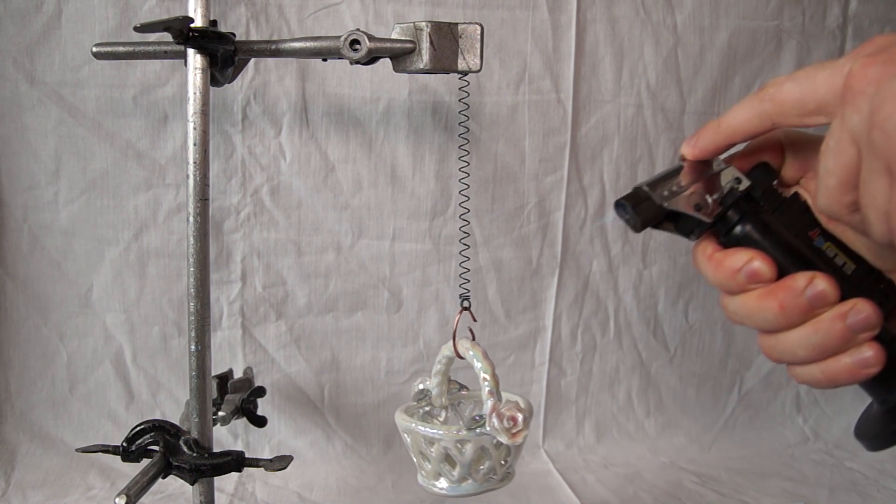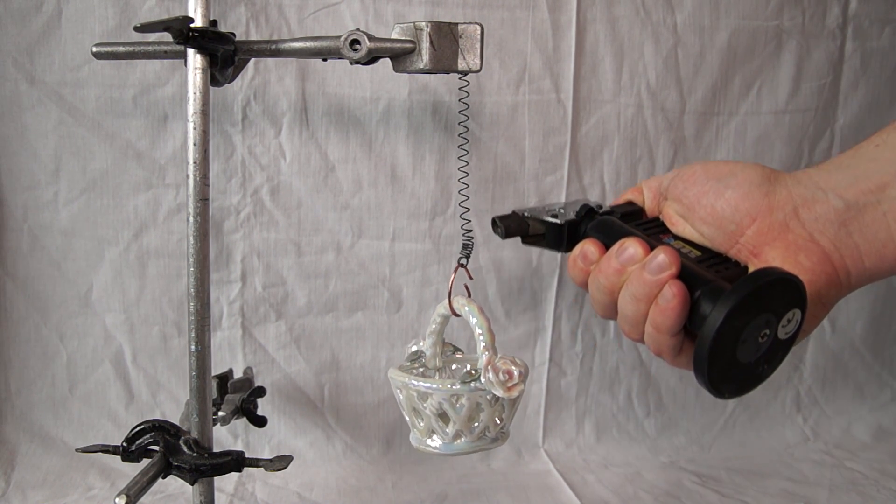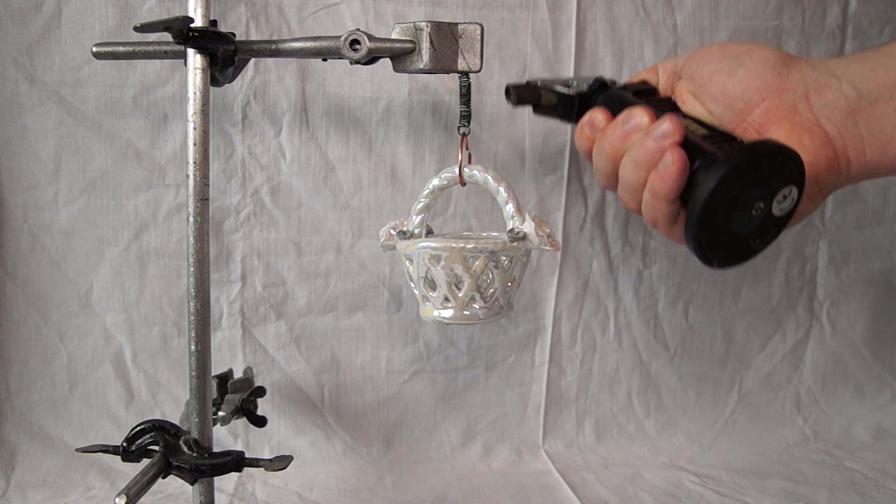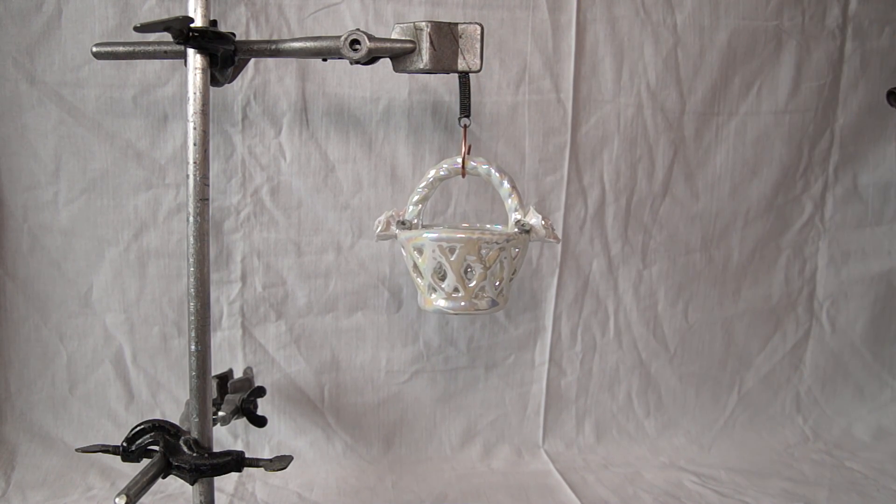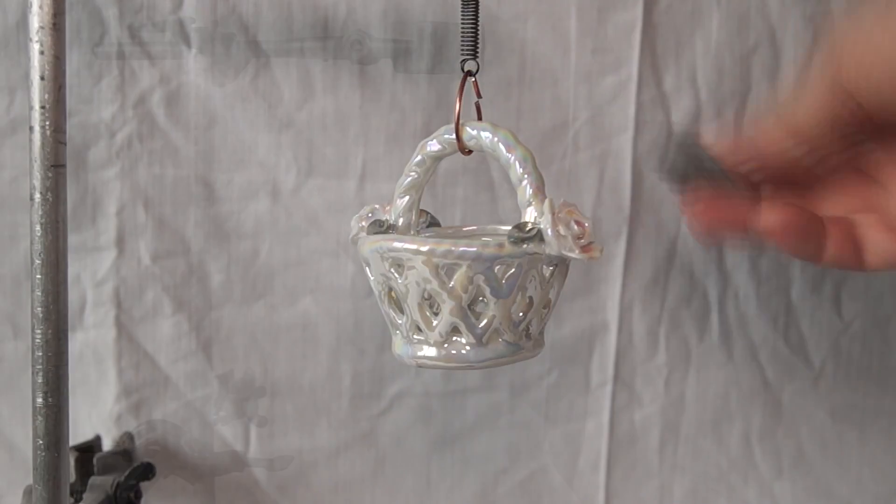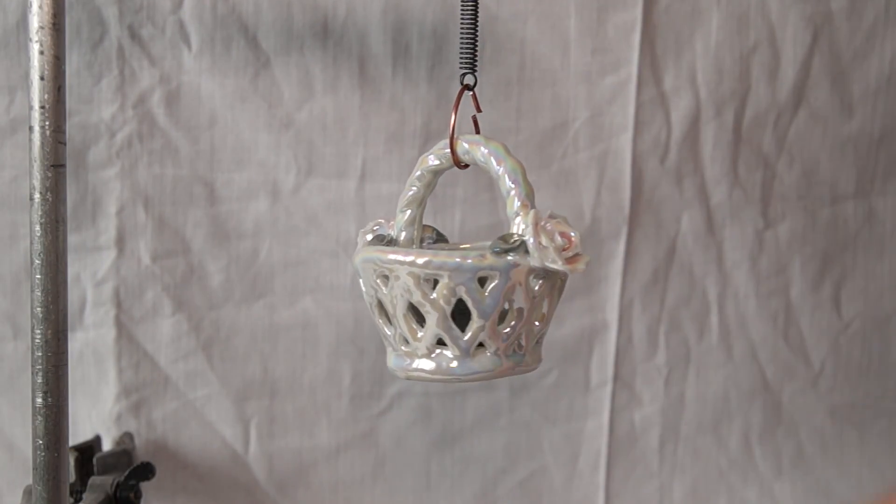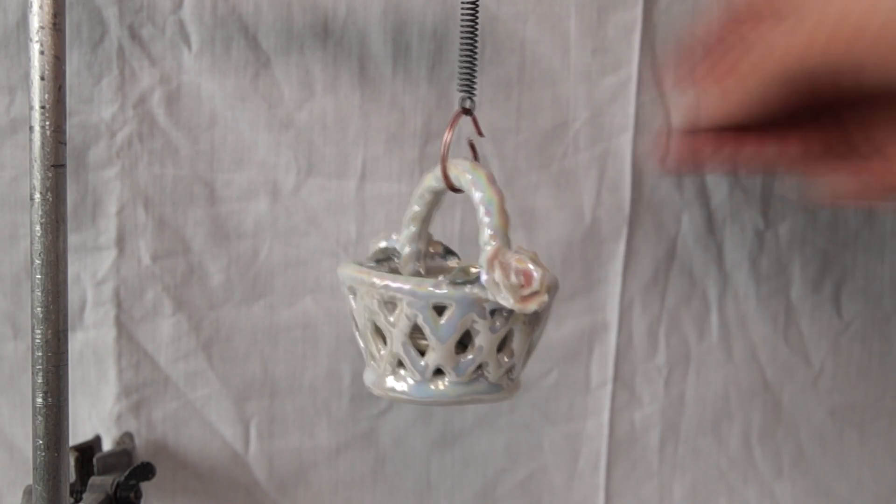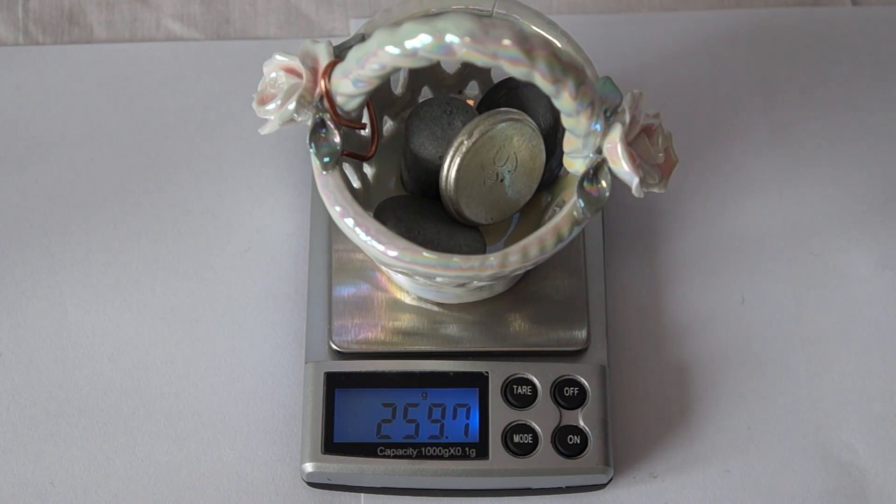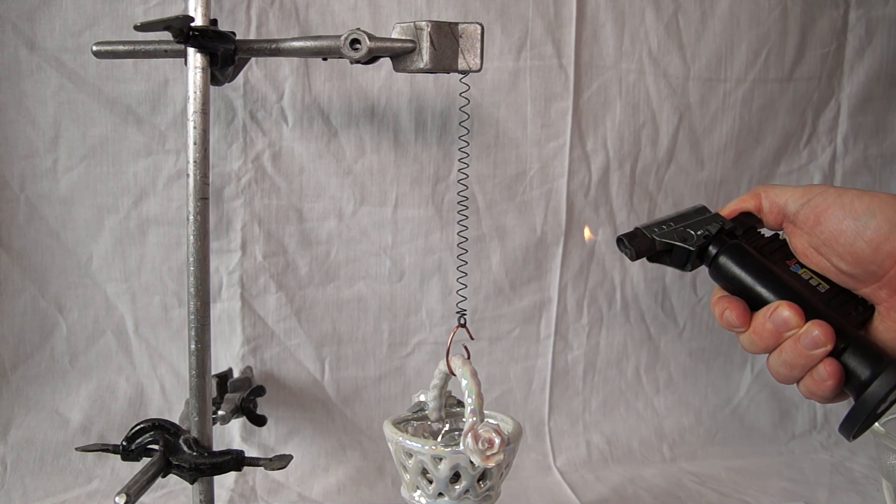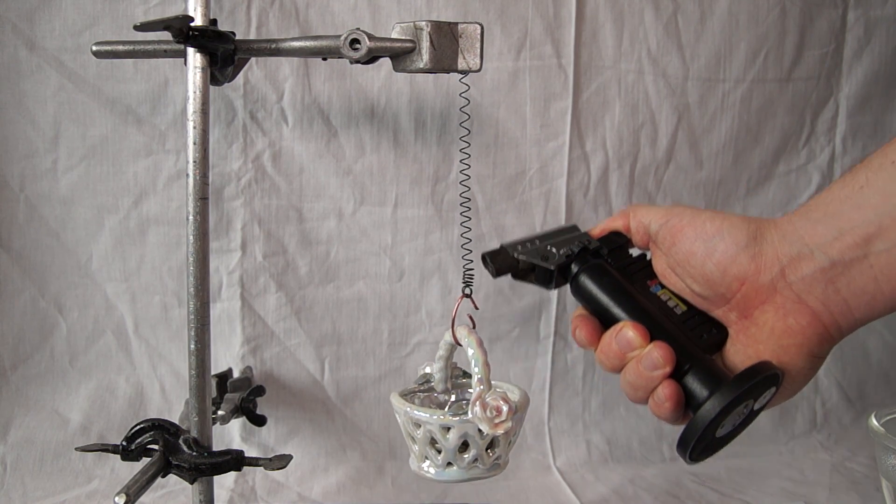Let's proceed. As you can see, the spring has lifted the basket quite easily. Now we'll complicate the task. I'm adding metal bearings into the basket and the total weight now becomes 278 grams. Testing the spring - as you can see, the spring can easily handle that task.